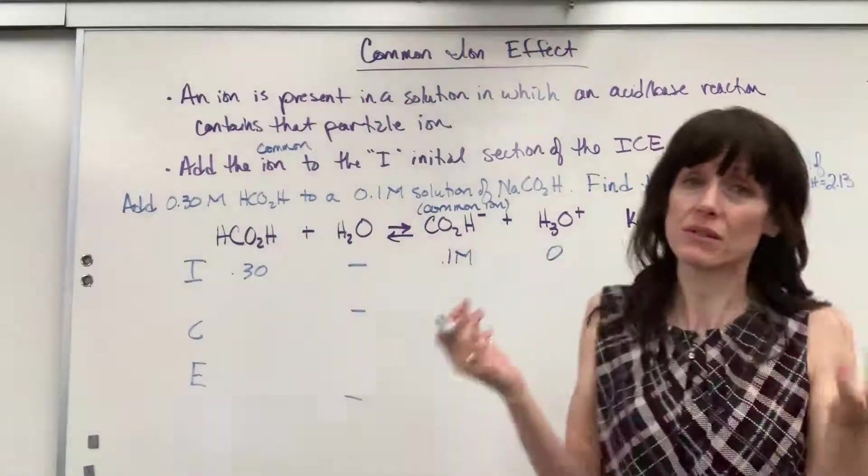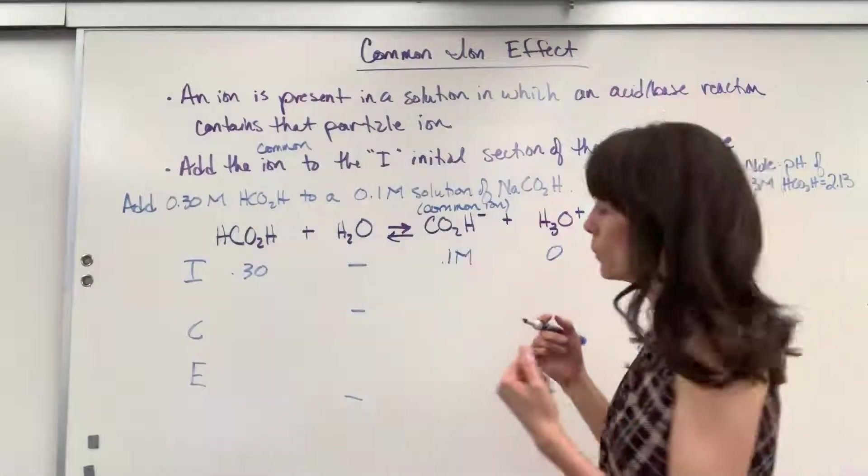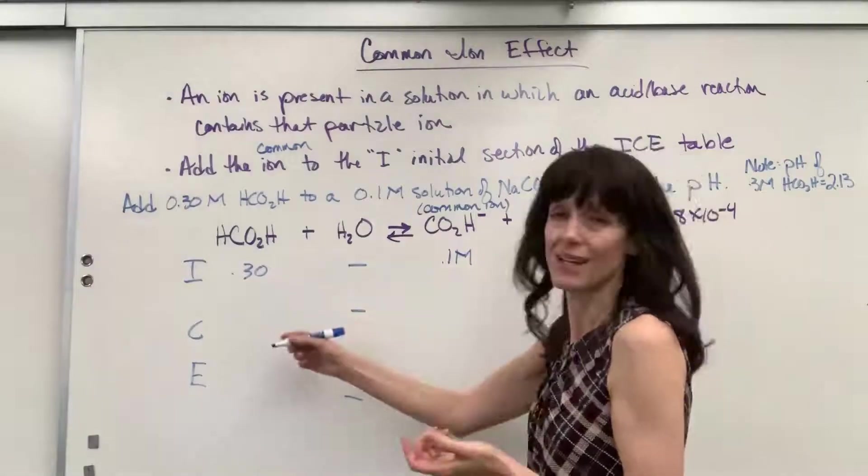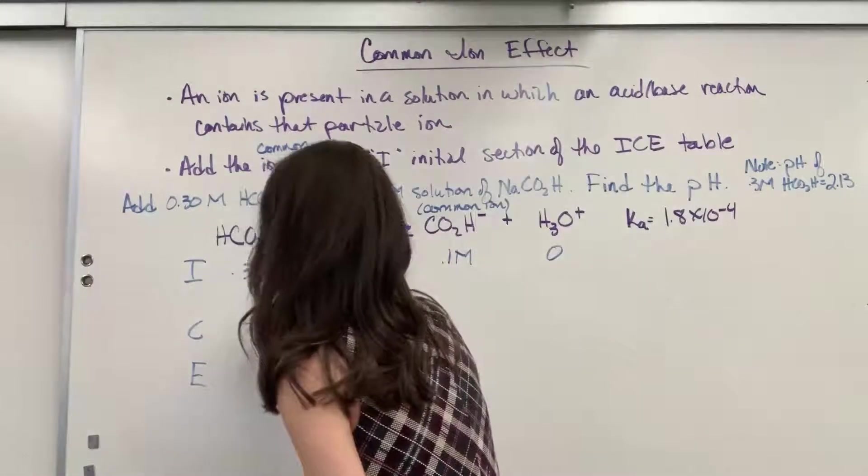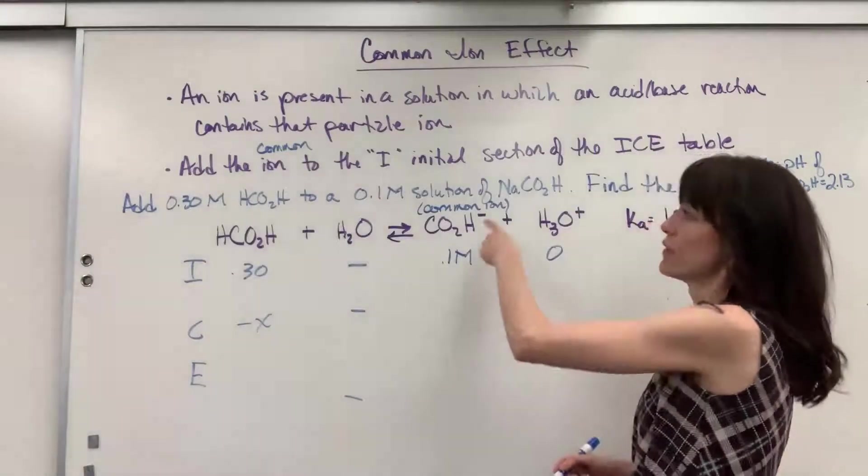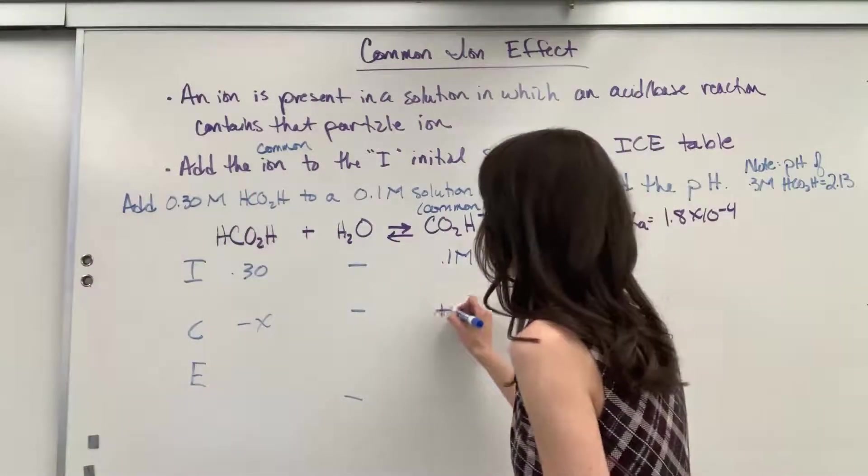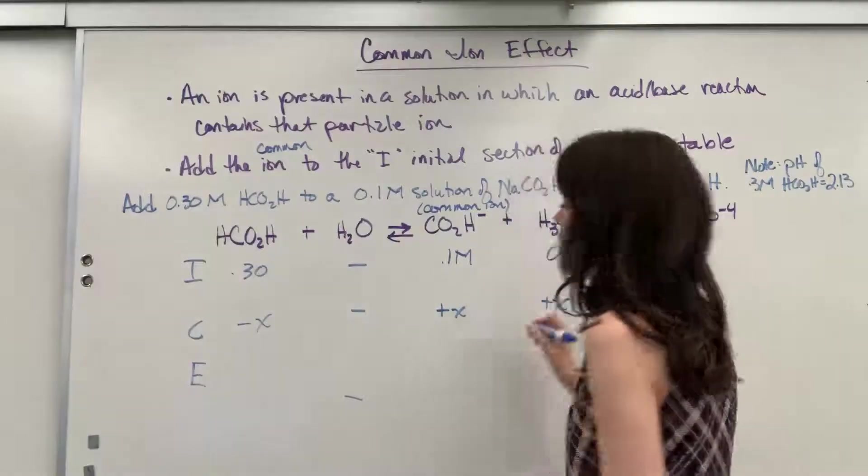Now, I'll have no hydronium, so that is zero. Everything else, we do it the way you know how to do it. We are going to consume some of the formic acid. So we'll put a minus x, and then we will produce the formate. So we're going to consume the formic acid, produce that formate ion, plus x, plus x.